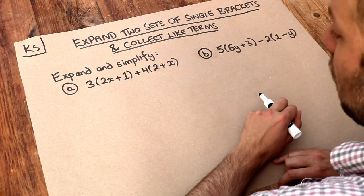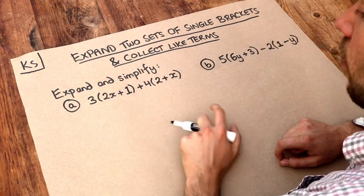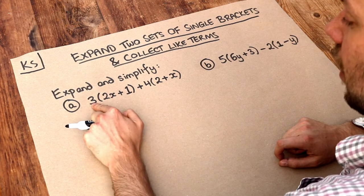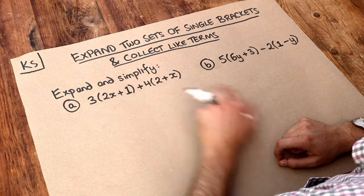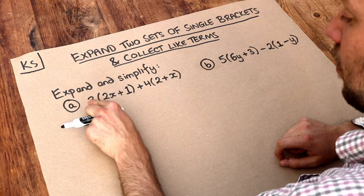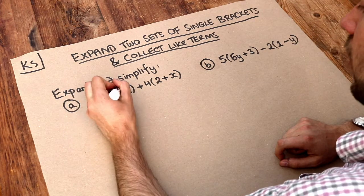Now in the previous video we looked at how we could expand a single bracket. And remember with something like this we can multiply whatever we have on the front by each of the things in the sum or the subtraction inside that bracket. So that 3 on the front gets multiplied by the 2x and it gets multiplied by the 1 as well.